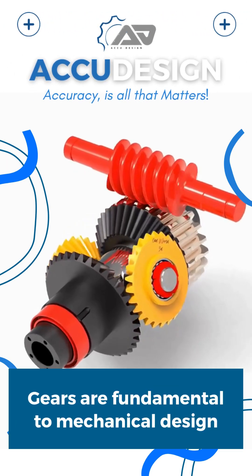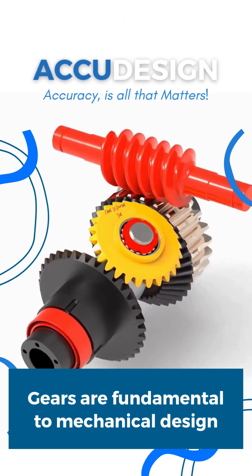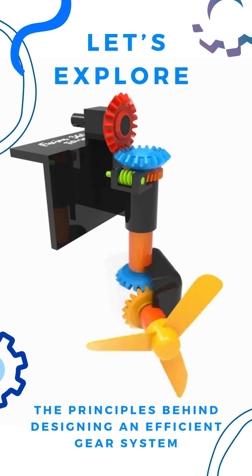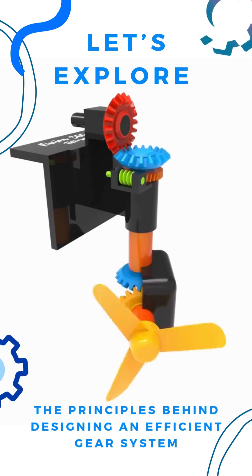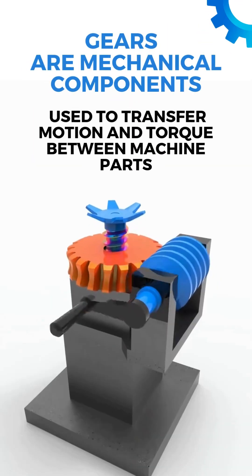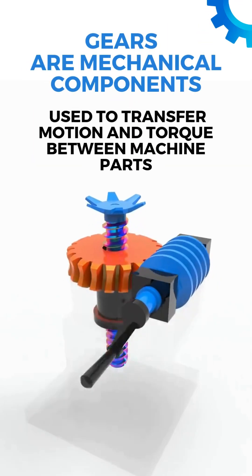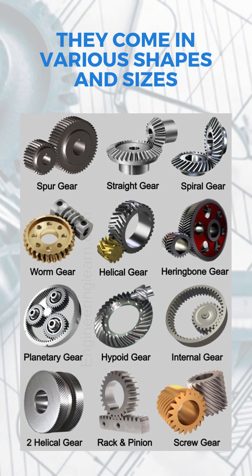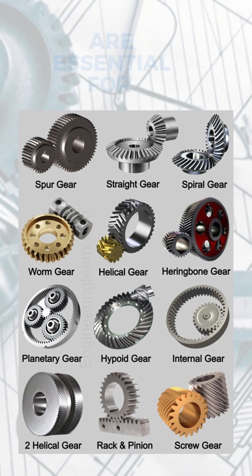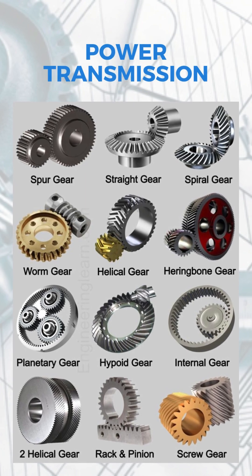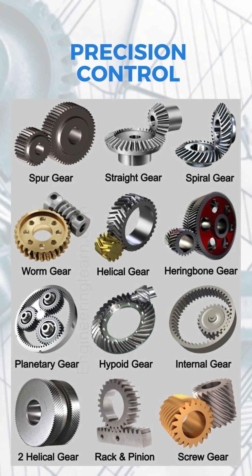Gears are fundamental to mechanical design. Let's explore the principles behind designing an efficient gear system. Gears are mechanical components used to transfer motion and torque between machine parts. They come in various shapes and sizes, and are essential for speed reduction, power transmission, and precision control.